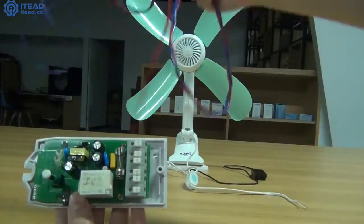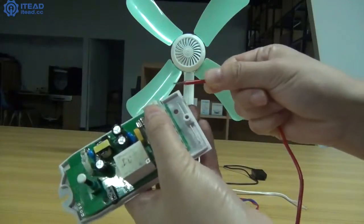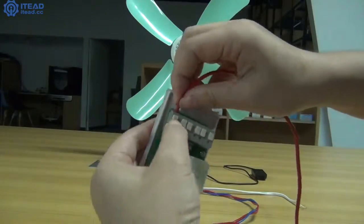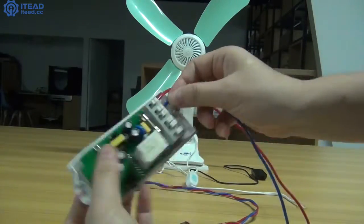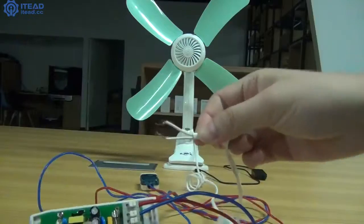First, wire a plug. Connect the live wire of the power plug to the live terminal of Sonoff TH. Connect the neutral wire of the power plug to the neutral terminal of it.